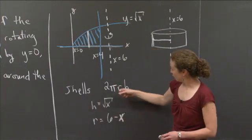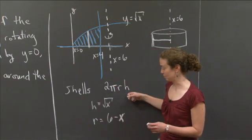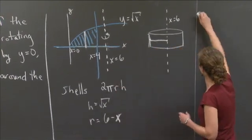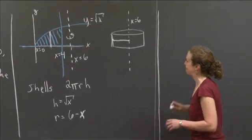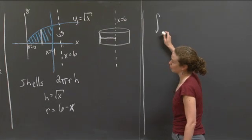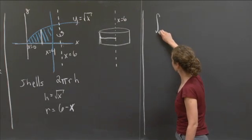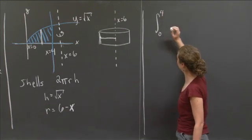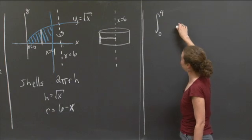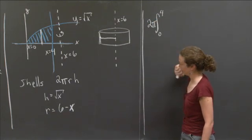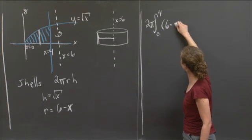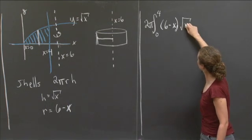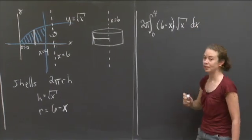So now I have the radius in terms of x, and I have the height in terms of x. So I can completely set up my integral. I know I'm integrating from x=0 and stopping at x=4. And then I want to integrate 2πrh. So I'll put the 2π out in front. And the radius is 6-x, and the height is √x. Then I'm integrating it all in dx.